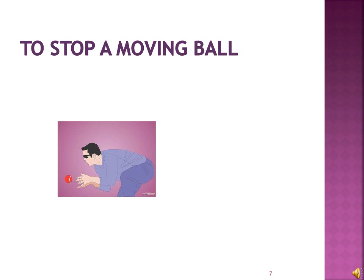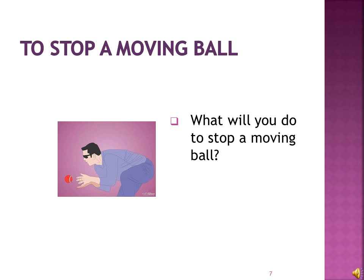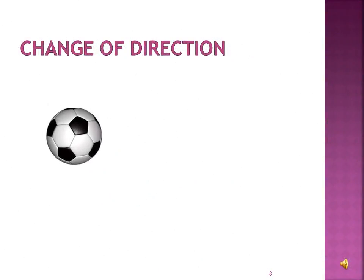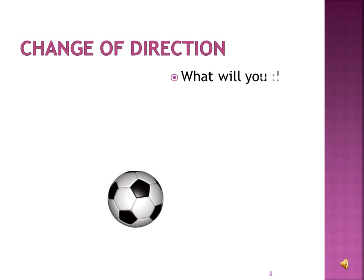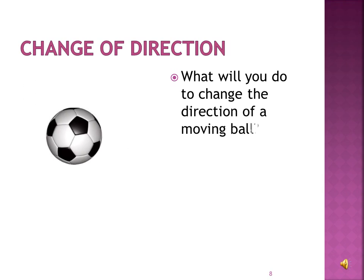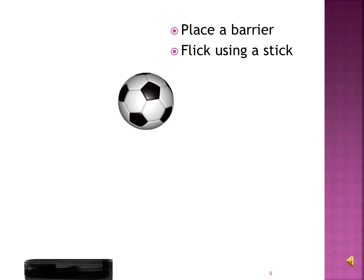Let us consider another case. A ball is moving towards you with great speed. If you want to stop that ball, you will catch it. To change the direction of a ball moving towards you, you either place a barrier so that it rebounds, or you flick the ball using a stick so that it moves towards another direction.